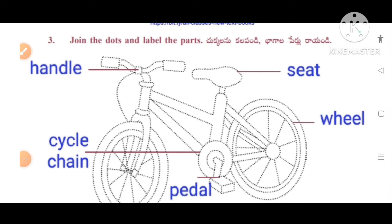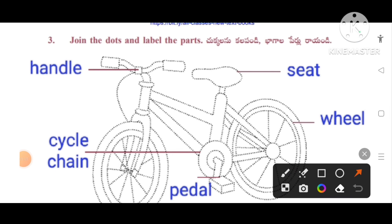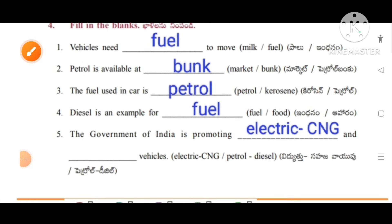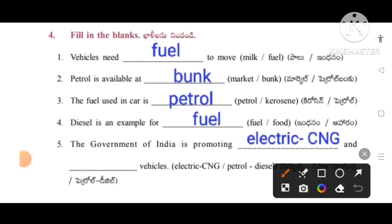Join the dots and label the parts of the bicycle: handle, seat, wheel, cycle chain, pedal. Fill in the blanks. First one: vehicles need fuel to move. Petrol is available at a bunk. The fuel used in a car is petrol. Diesel is an example of fuel. The government of India is promoting electric and CNG vehicles.